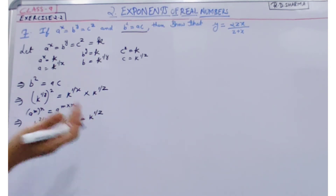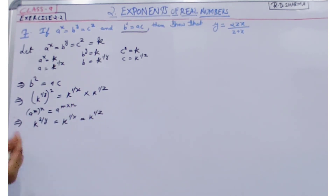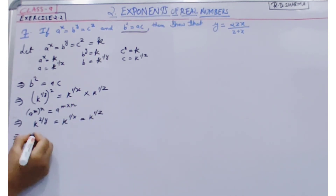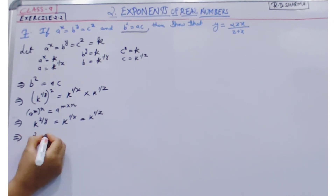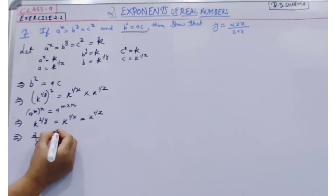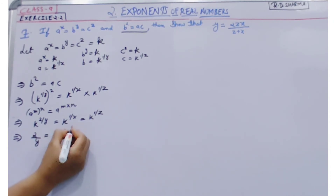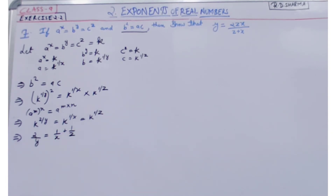Our bases are the same, so we can equate the powers. Therefore, 2 by y is equal to 1 by x plus 1 by z.